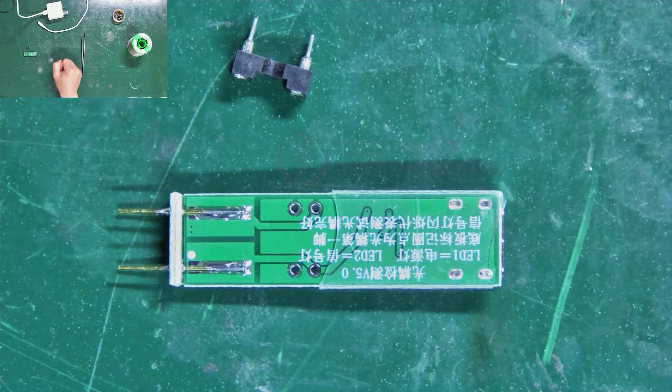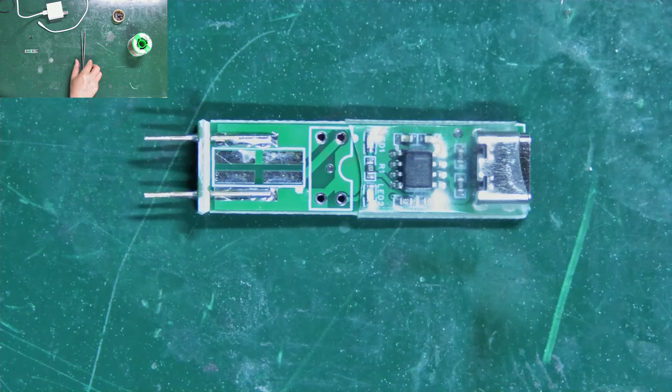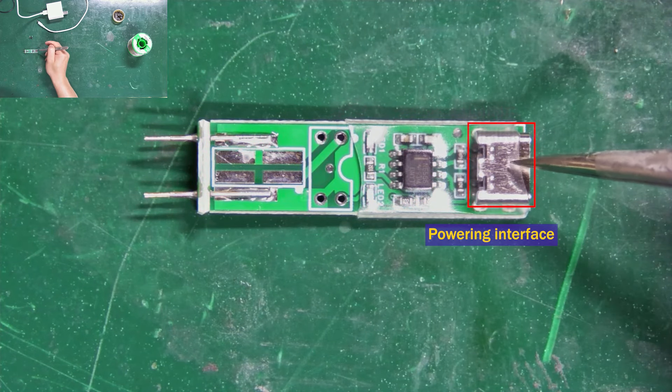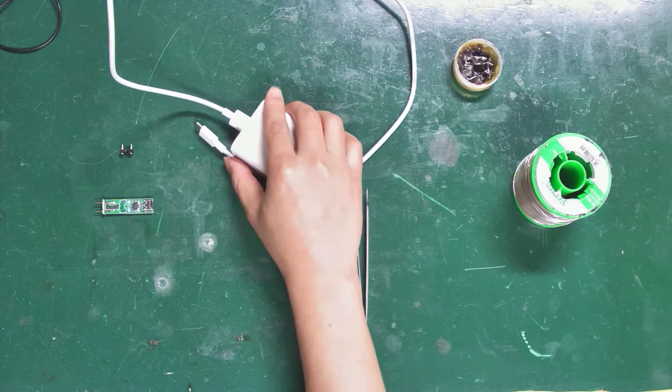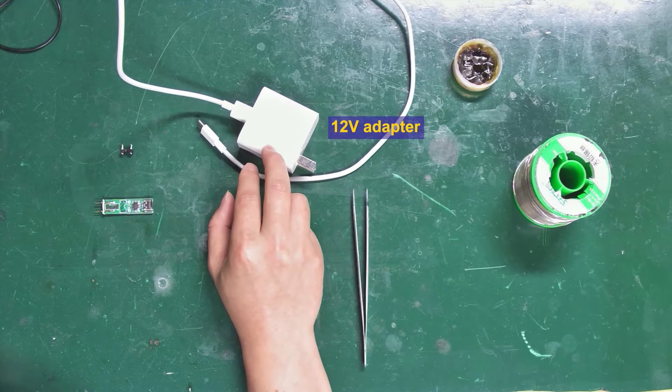Here's the back side. Now, let's go through the different interfaces on the module. This is the powering interface for the tester, which uses a 12V DC voltage. For example, a 12V adapter like this can power it.